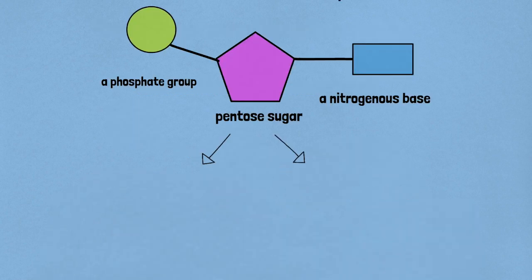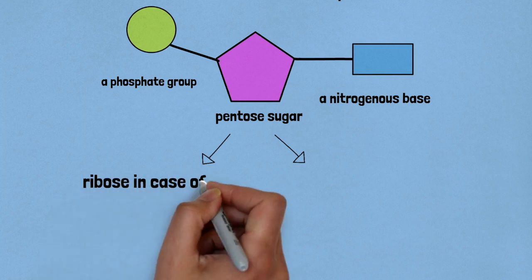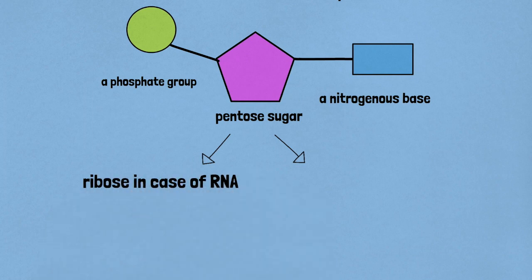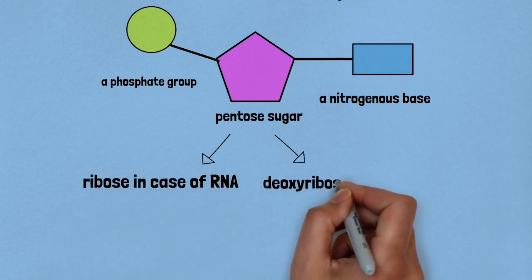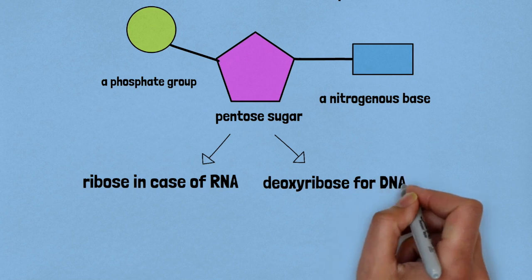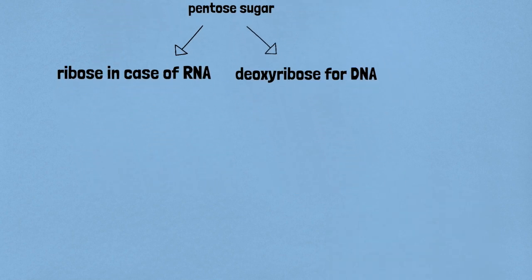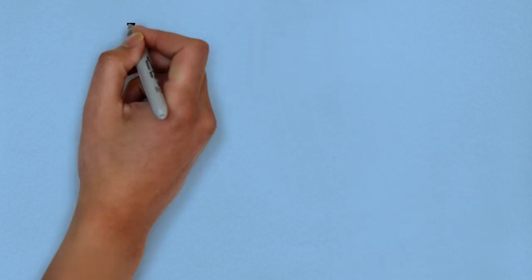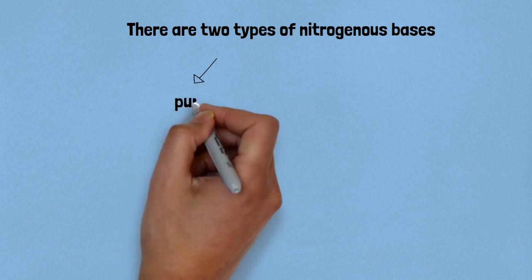These sugars differ in the case of RNA and DNA. In the case of RNA we have ribose sugar, and in the case of DNA we have a deoxyribose sugar. There are two types of nitrogenous bases: purines and pyrimidines.